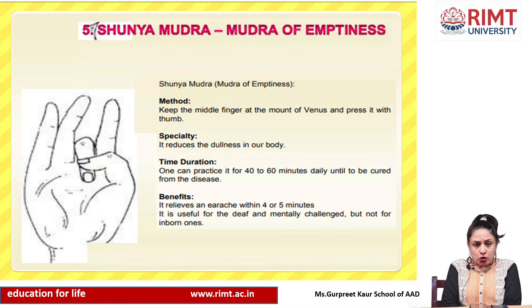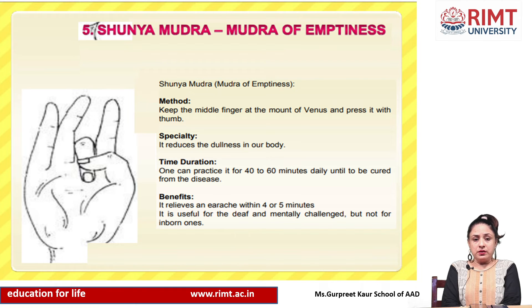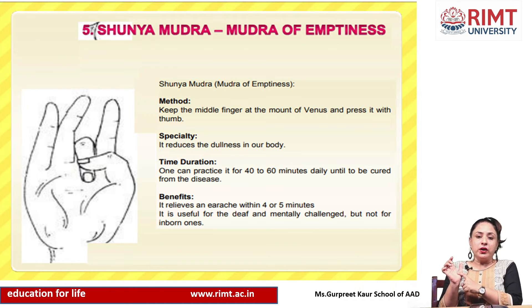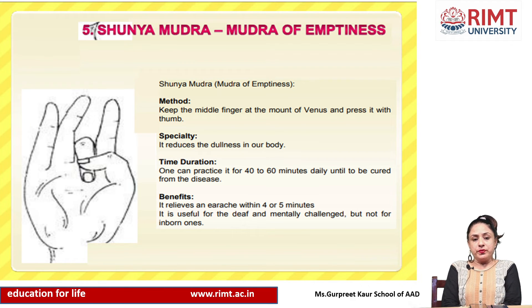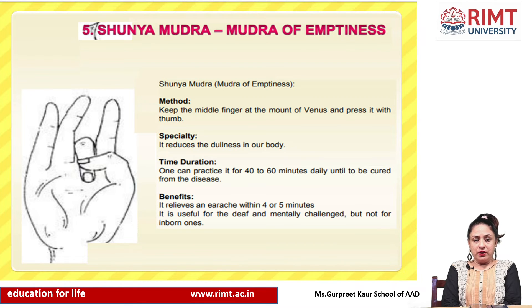Next is Shunya Mudra, also called the Mudra of Emptiness. Method: keep the middle finger at the mount of Venus and press it with the thumb. Specialty: it reduces dullness in our body. Time duration: one can practice it for 40 to 60 minutes daily until cured from the disease. Benefits: it relieves an earache within 4 or 5 minutes and is useful for the deaf and mentally challenged, but not for inborn conditions.